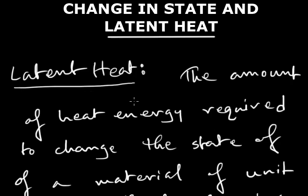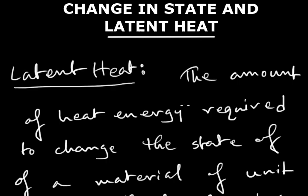Suppose a material is in solid state and we want to change its state from solid to liquid. We give external heat to it and the temperature of the material will rise up to the melting point. When the melting point is reached the material will undergo a change in state from solid to liquid. During this process the material requires some additional external energy, and that energy which we supply additionally without changing the temperature is known as the latent heat.